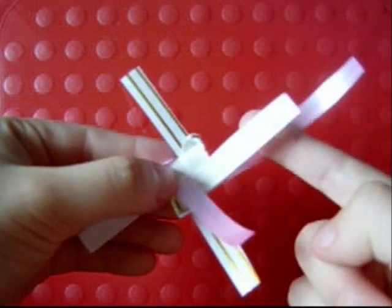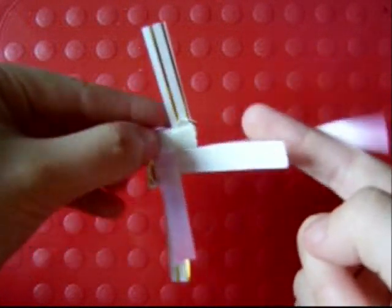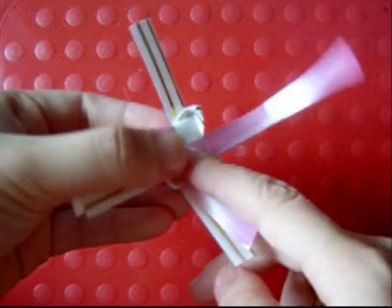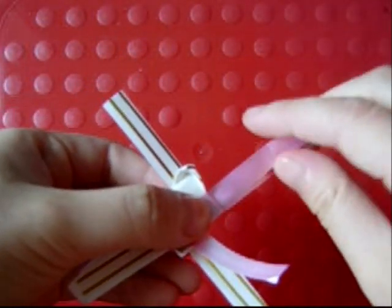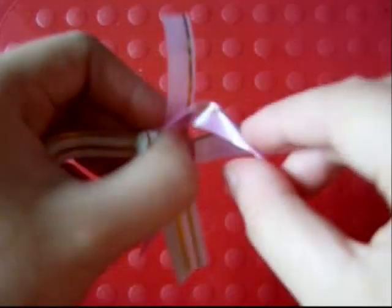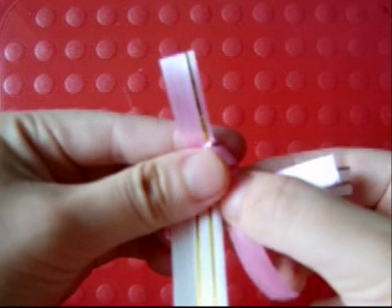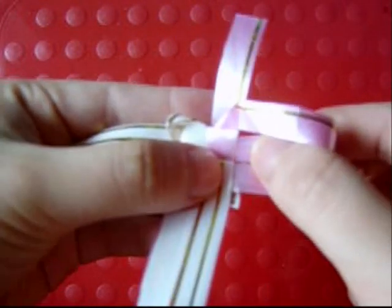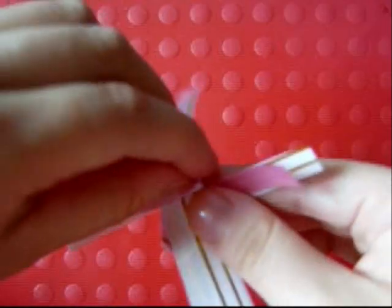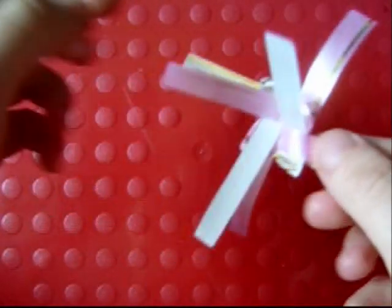you'll have three strips. So move the first one out of the way because this is just the tip of the first petal you did. Then you make the petal with this strip. Now you have four petals.